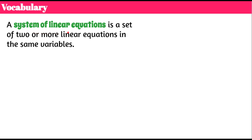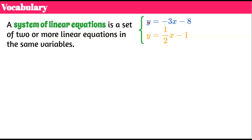Let's review some vocabulary. A system of linear equations is a set of two or more linear equations in the same variables. In this video we're only going to use a system of two equations. Here's an example: y equals negative 3x subtract 8 is one linear equation, and y equals one half x subtract 1 is a second equation. Together these two form a system of linear equations.